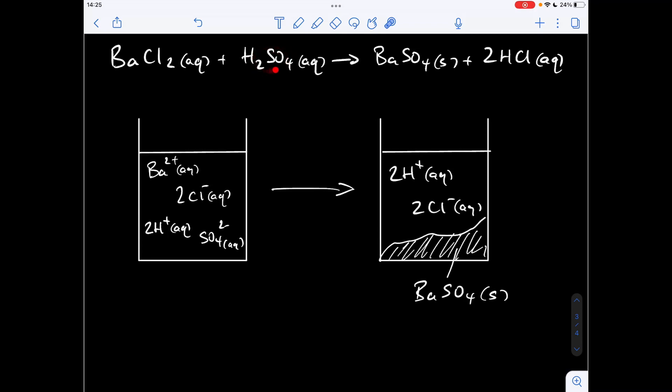If we move on to the sulfuric acid. So remember, we show these as ions as well, because it's an aqueous acid. So which ions are present in sulfuric acid? We've got two H plus ions. So there they are there. And we've got one sulfate ion. So there's that there.